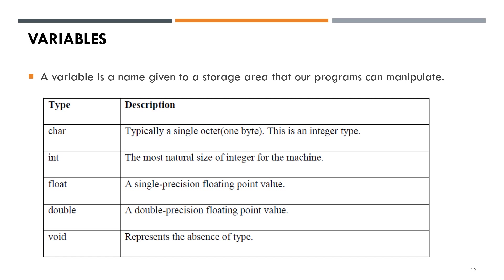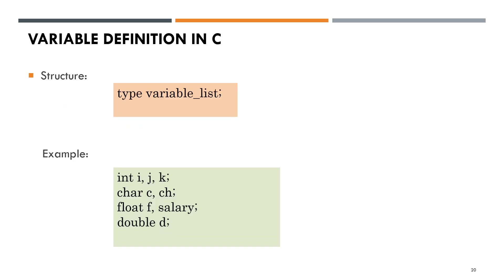Variables. A variable is a name given to a storage area that our programs can manipulate. It can be of type char, integer, float, double, and void. This is the structure of how to define a variable in C. Examples: variables i, j, k of type integer; variables c, ch of type char; variables f, salary of type float; and variable d of type double.